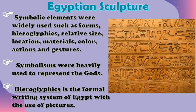Now in the Egyptian sculpture, symbolic elements were widely used, such as forms, hieroglyphics, relative size, location, materials, color, actions, and gestures. Symbolisms were heavily used to represent the gods. Hieroglyphics is the formal writing system of Egypt with the use of pictures. As you can see in the picture on the right side, there is an example of hieroglyphics which they carved in the caves as a use of communication.